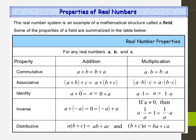Time for some properties of real numbers. We're not talking Boardwalk and Park Place monopoly properties — we're talking math properties, the fun kind. The commutative property basically means you're able to flip it. So A plus B is the same as B plus A. Same with multiplication: A times B is the same as B times A.